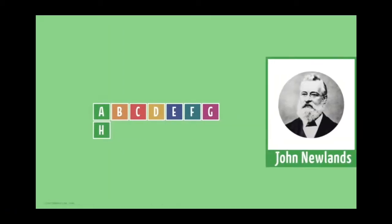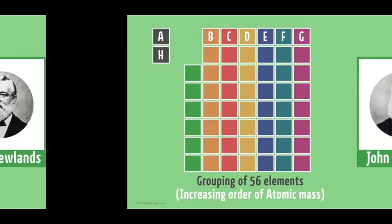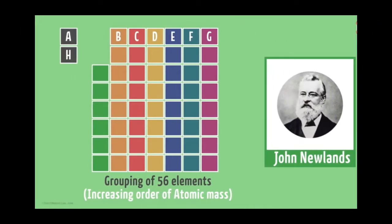After grouping the elements in a series of three, there came a system in which the elements were grouped in a series of eight. And this system was put forth by a scientist, John Newlands, in the year 1866. John Newlands grouped around 56 elements. He arranged the elements in the increasing order of atomic masses. And he analyzed that every eighth element resembled the first element.